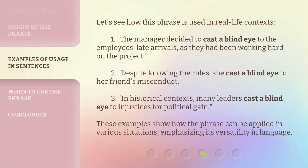Let's see how this phrase is used in real-life contexts. The manager decided to cast a blind eye to the employees' late arrivals, as they had been working hard on the project. Despite knowing the rules, she cast a blind eye to her friend's misconduct. In historical contexts, many leaders cast a blind eye to injustices for political gain. These examples show how the phrase can be applied in various situations, emphasizing its versatility in language.